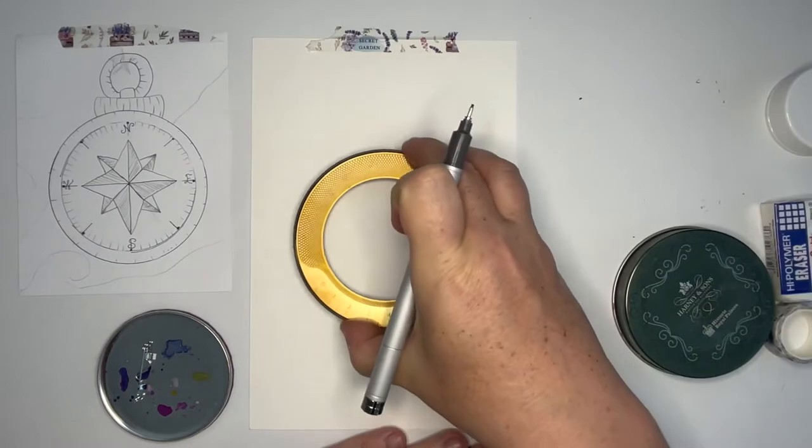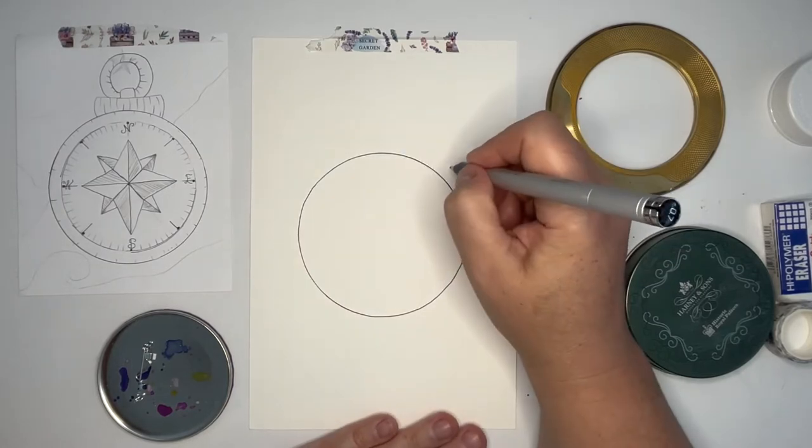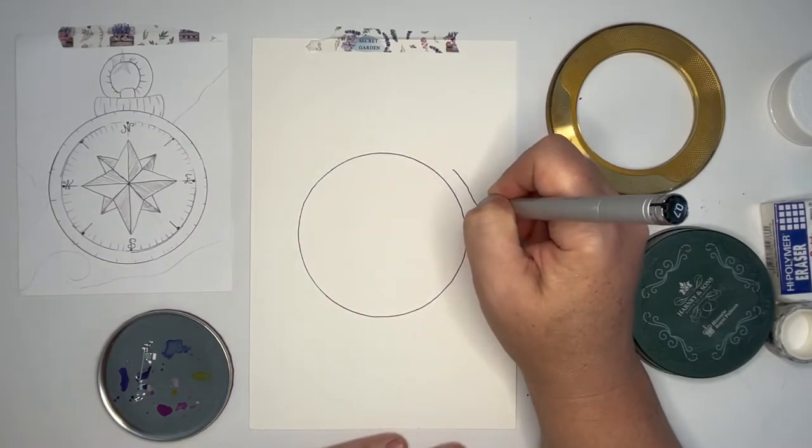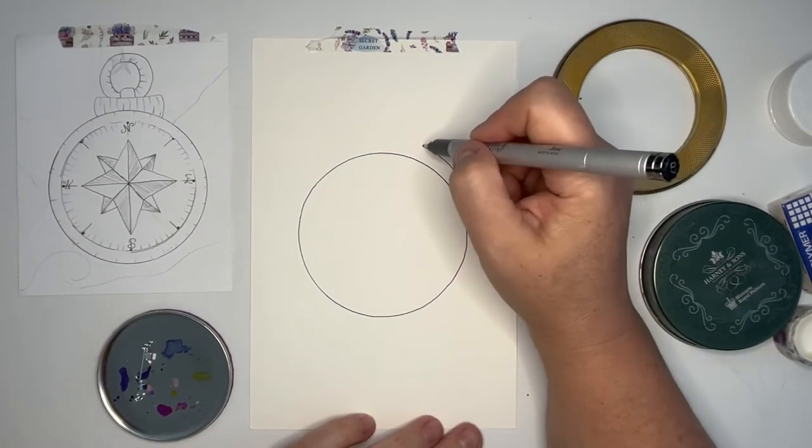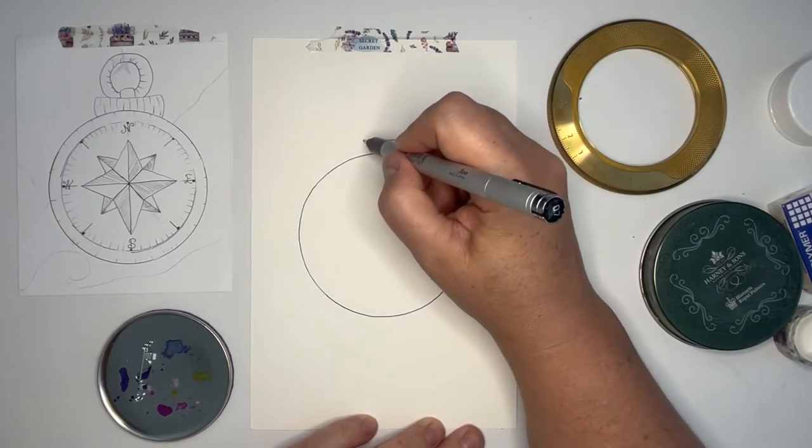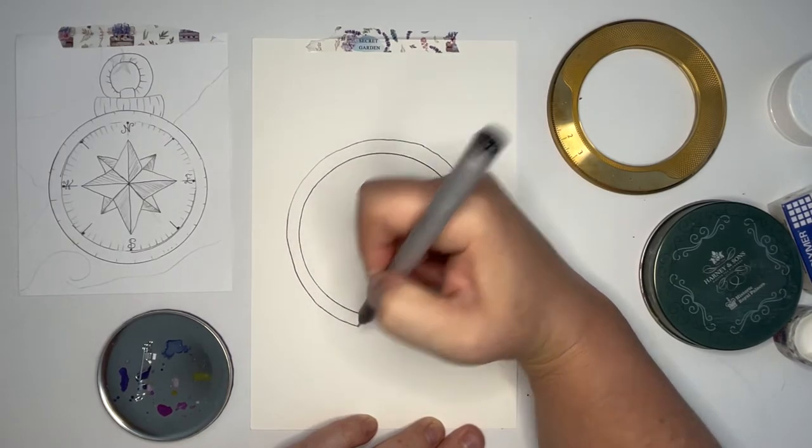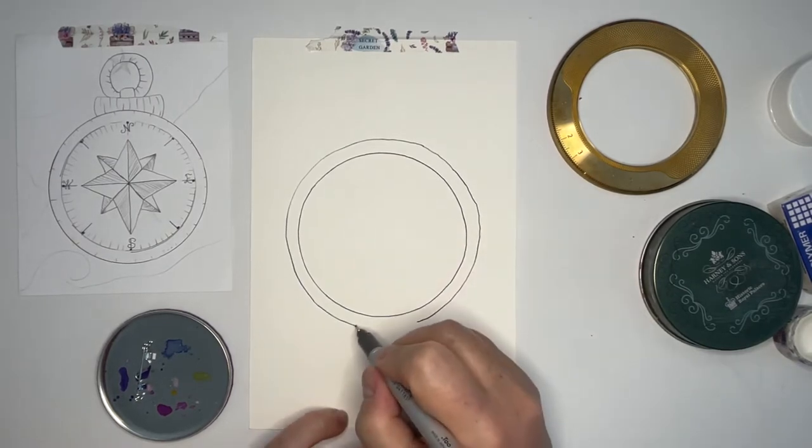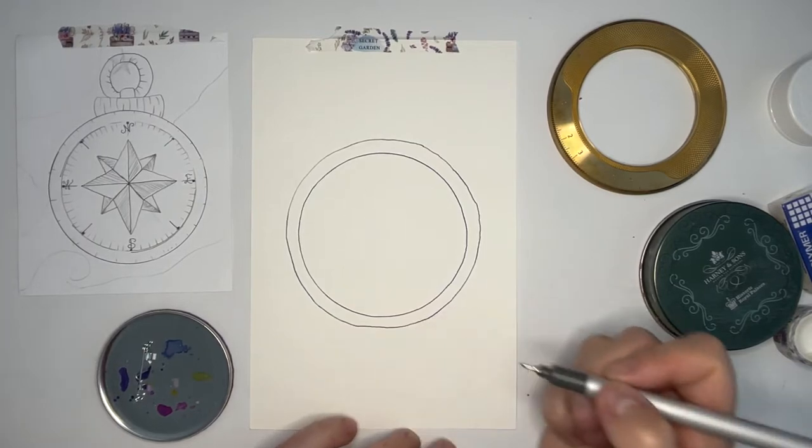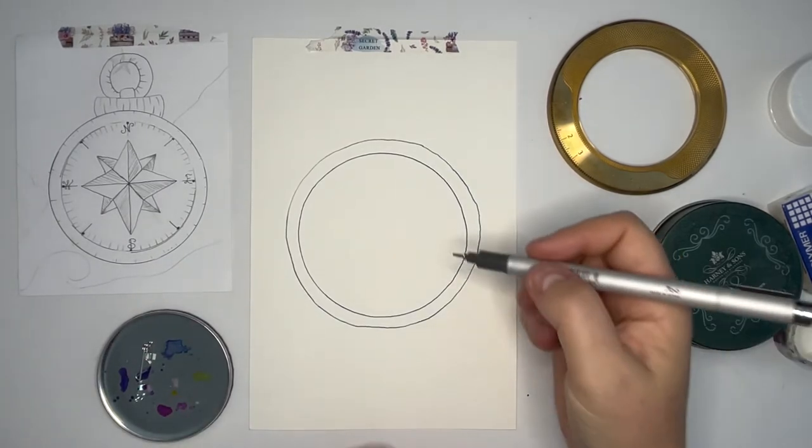This is gonna be my inner circle because I think I want my compass to be a little bit bigger. I'm just gonna have to freehand this one, so I'm just going to try to stay the same distance away from that first circle as I go all the way around. It's not gonna matter a lot if it's a little bit off and it's not perfect, just go with it.